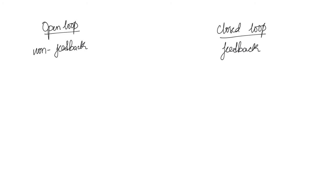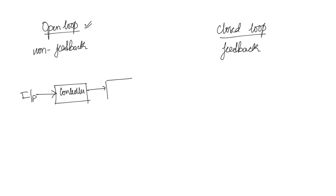The general representation of an open loop system will be like this: it will have one controller, and an input will be given to the controller. From the controller the output goes to a plant, and this will give the output. We will understand this by means of a simple example.